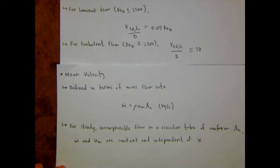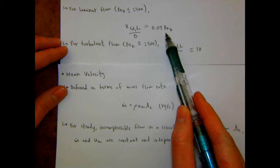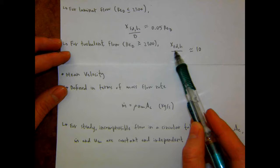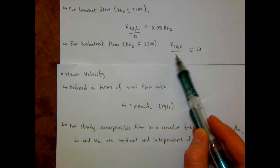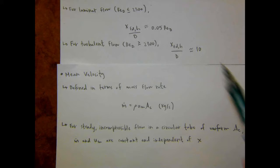Student question: For the dimensionless entry length equation, is the turbulent one just equal to 10? Yes, it's just 10 — no units, since the Reynolds number is dimensionless. So the entry length, the distance down the pipe where flow becomes fully developed, is 10 times the diameter in turbulent flow. In laminar flow, the entry length varies with Reynolds number — increasing velocity increases the entry length. In turbulent flow, you're above a high enough Reynolds number that the entry length becomes independent of Reynolds number changes.